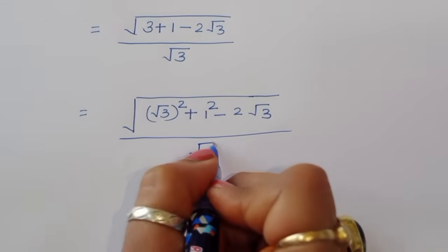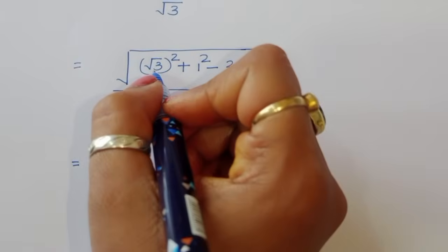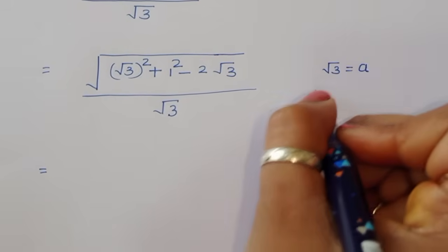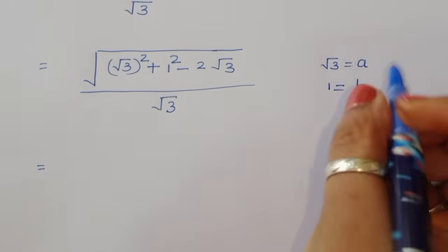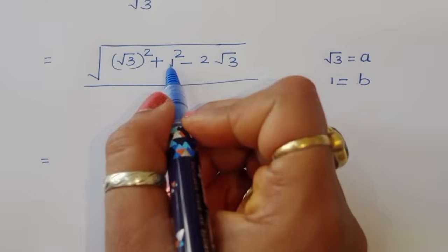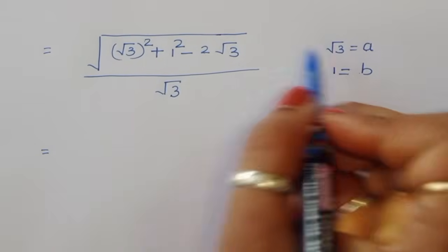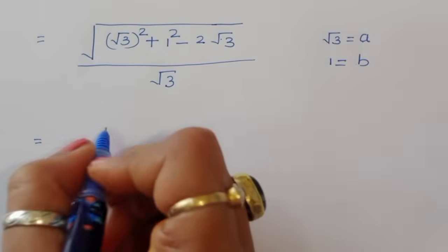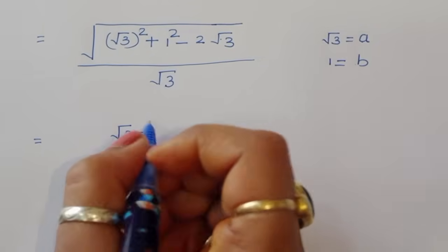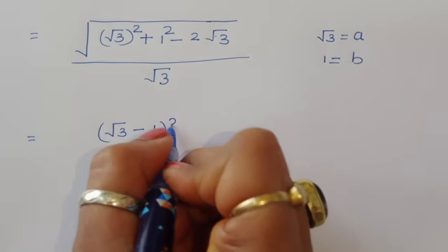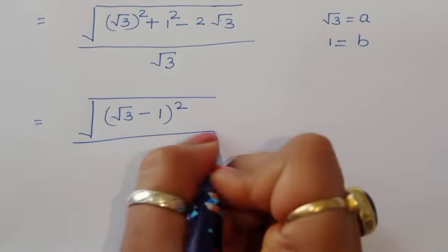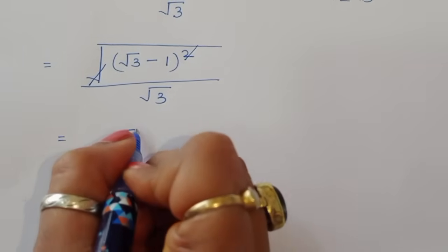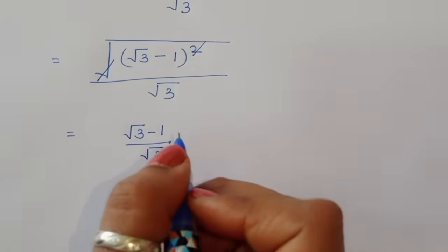So we have square root of ((square root of 3)² plus 1² minus 2 times square root of 3 times 1) divided by square root of 3. Recognizing a = square root of 3 and b = 1, this matches the formula a² - 2ab + b² = (a - b)². So the expression becomes square root of (square root of 3 minus 1)² divided by square root of 3, and the square root and square cancel, leaving (square root of 3 minus 1) divided by square root of 3.